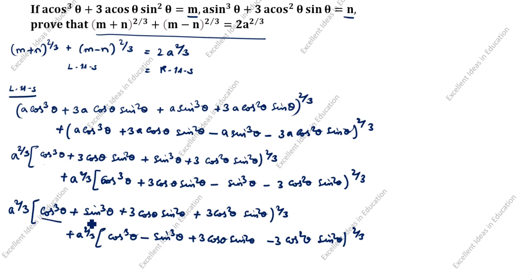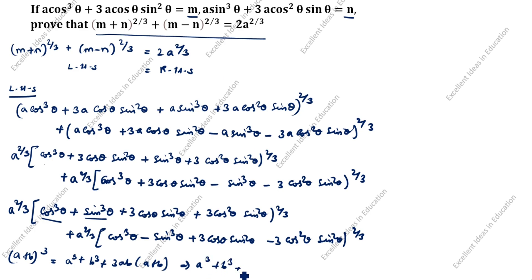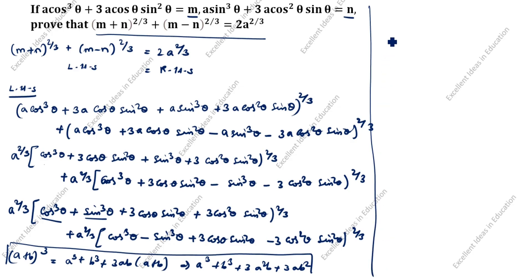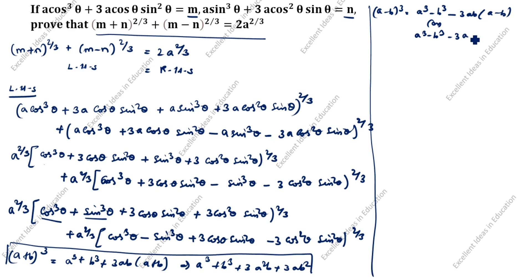You see here: cos³θ and sin³θ. What is the formula of (a+b)³? It is a³ + b³ + 3a²b + 3ab². And (a−b)³ = a³ − b³ − 3a²b + 3ab².